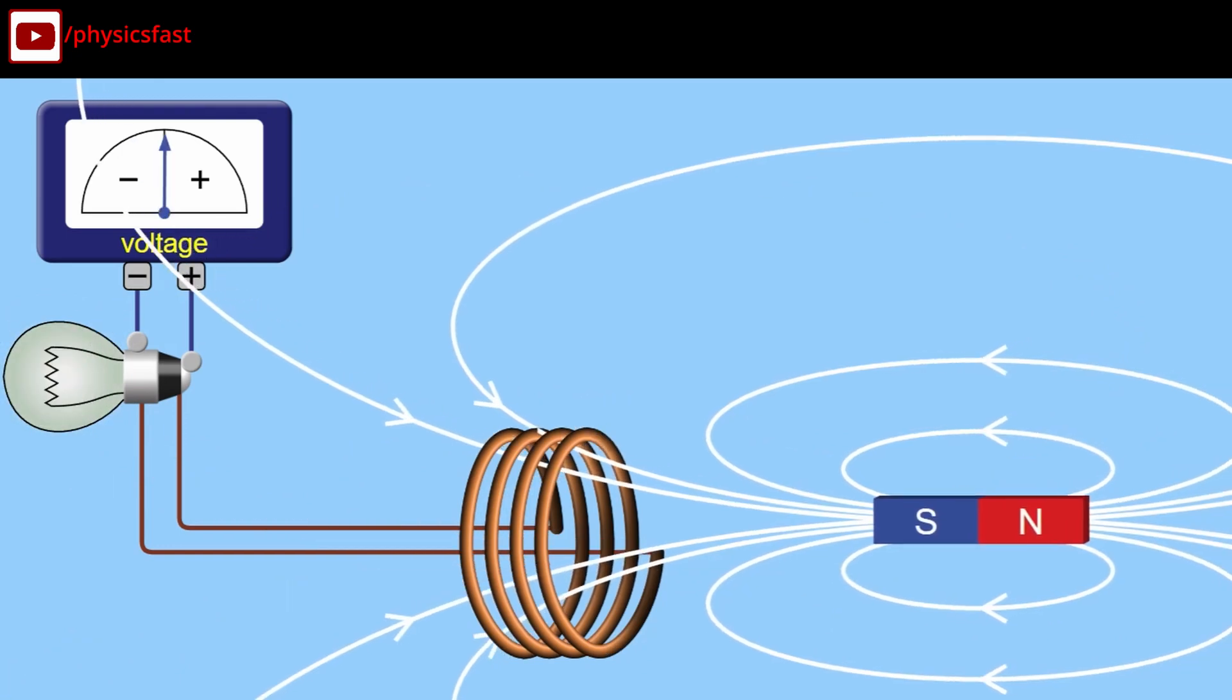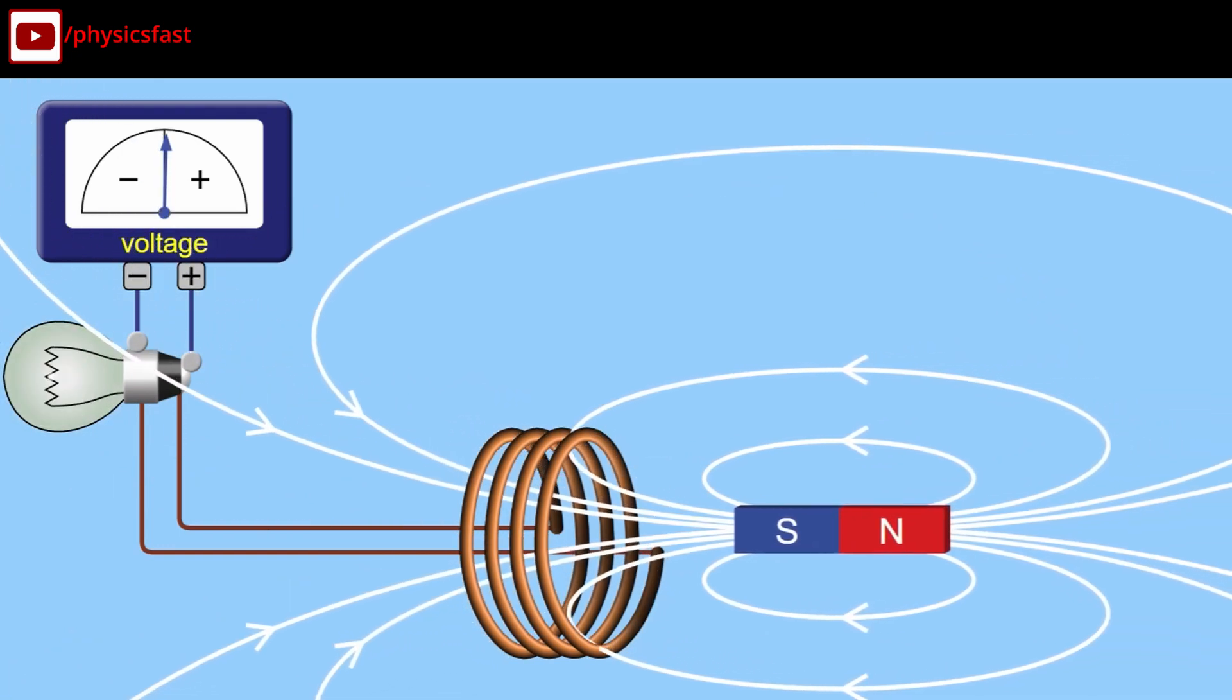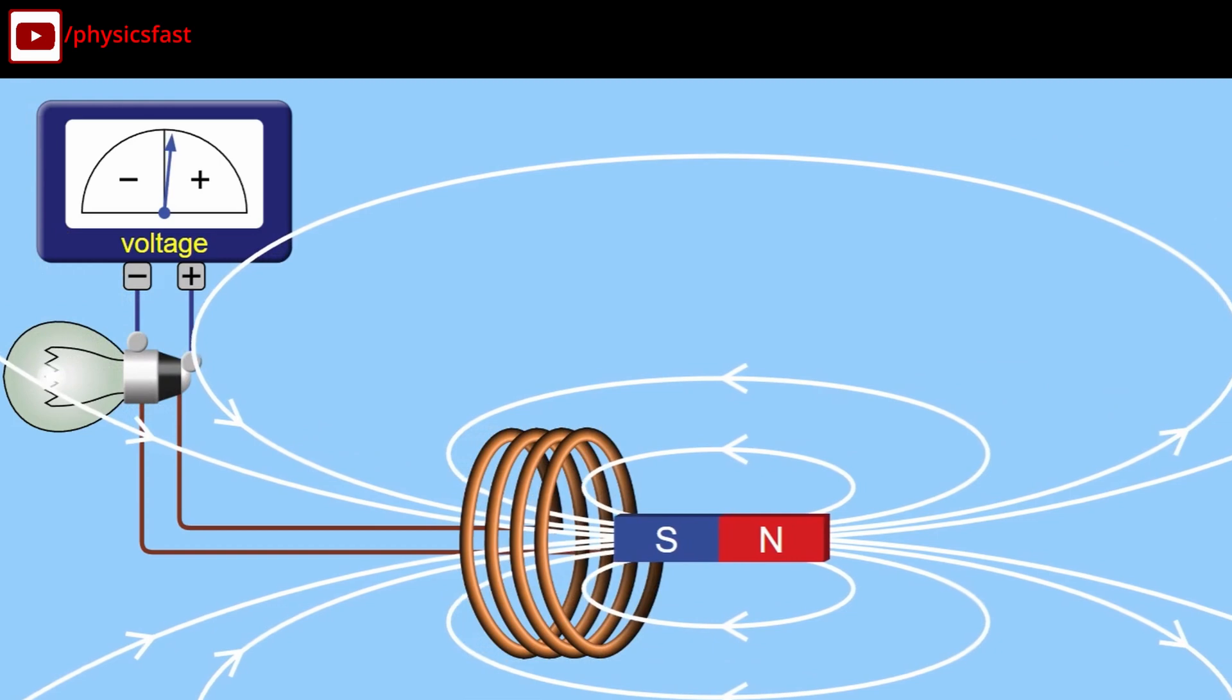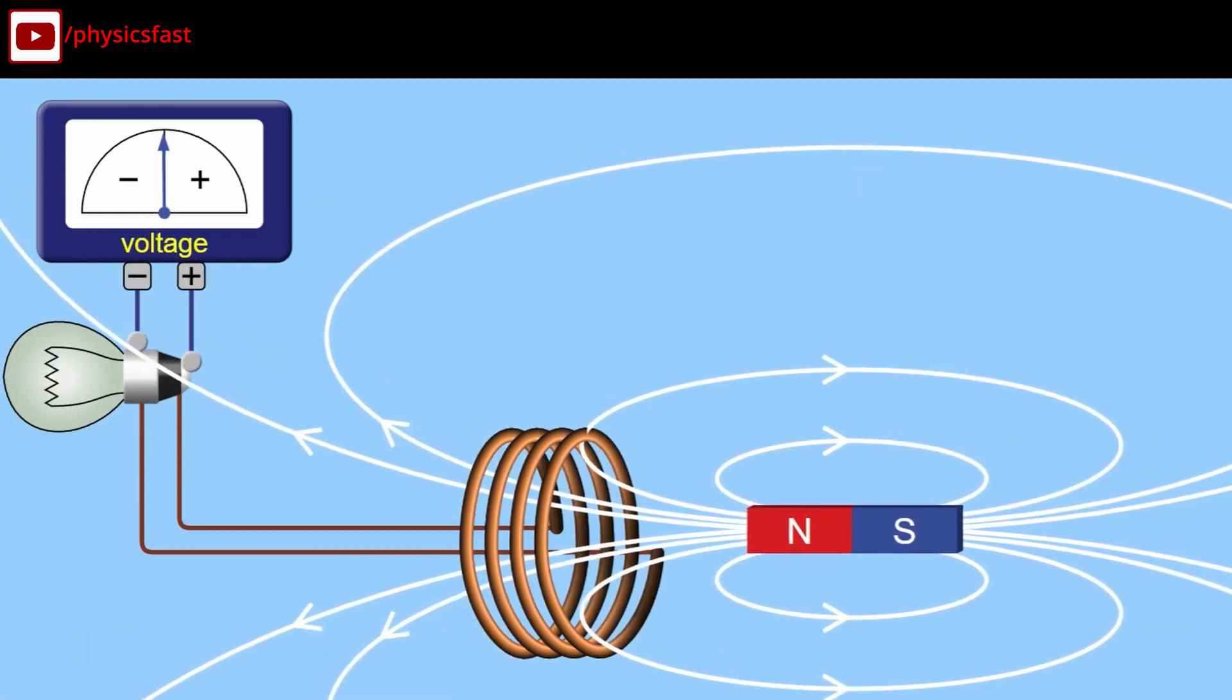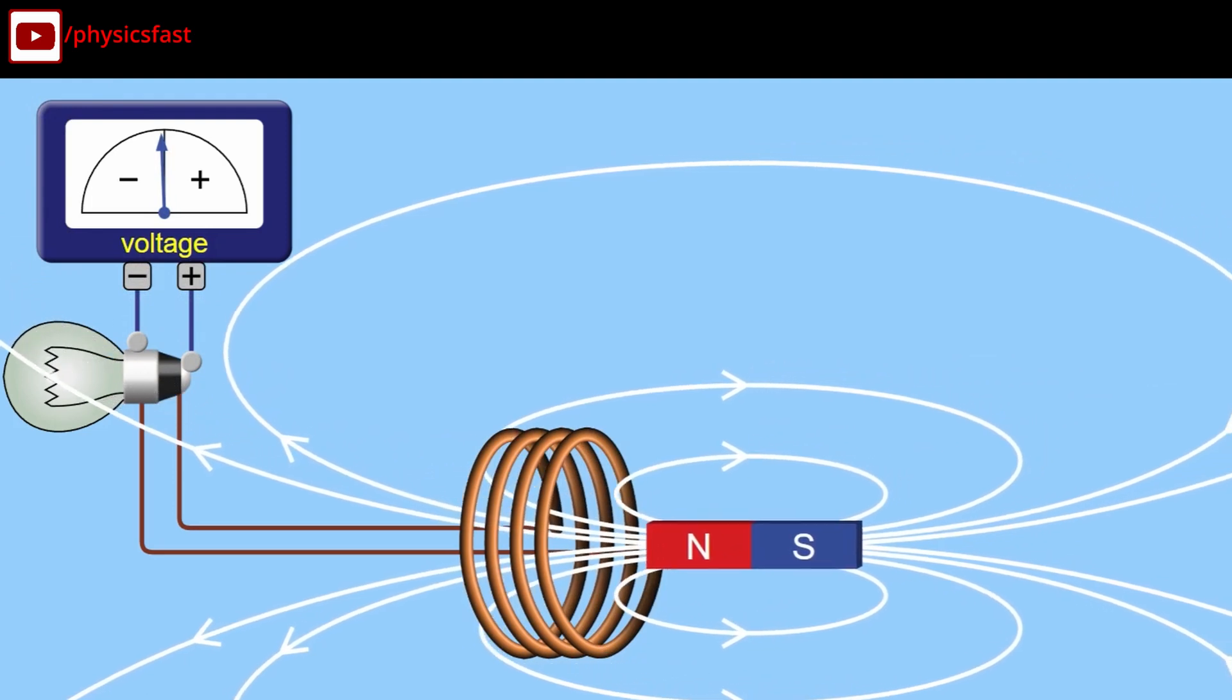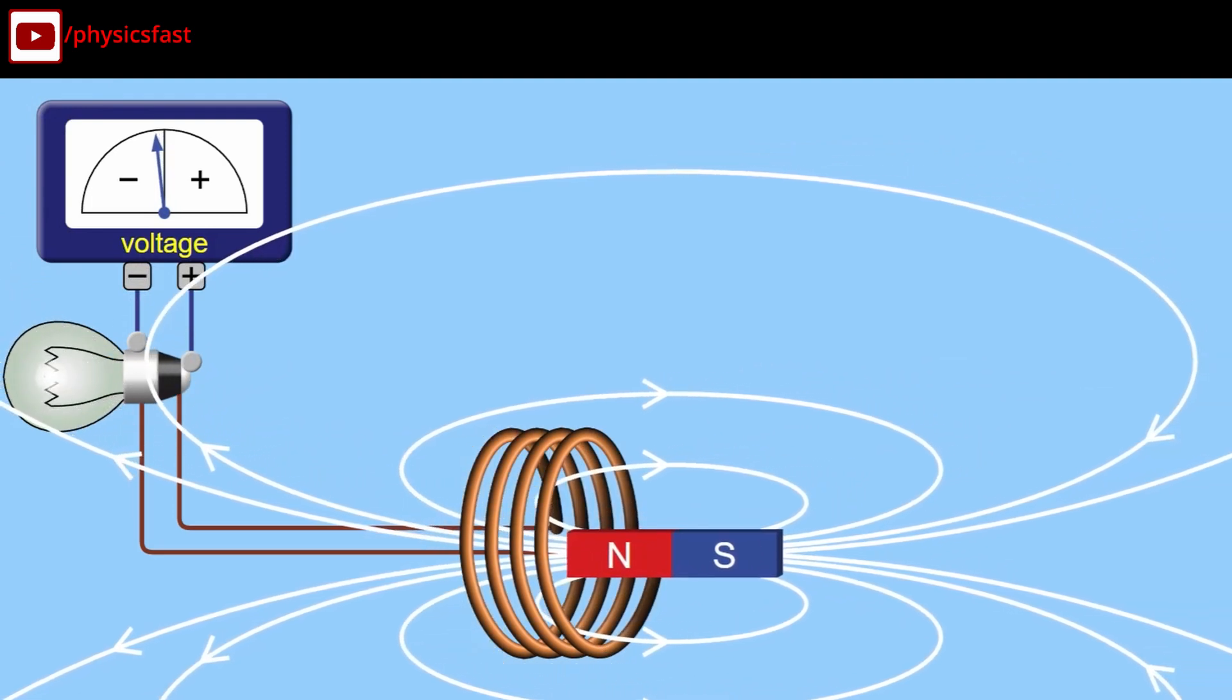As the bar magnet is moved away from the coil, the magnetic flux linked with the coil decreases. An induced EMF and hence an induced current is set up in the coil in the opposite direction.